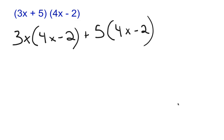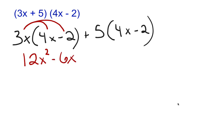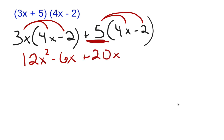Now we do our distribution steps. We do 3x times 4x, which is 12x squared. Then 3x times negative 2, which is minus 6x. Then positive 5 times 4x, which is 20x, and positive 5 times negative 2, which gives you negative 10.